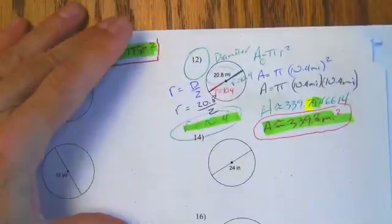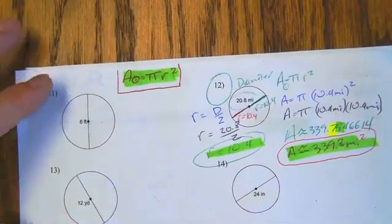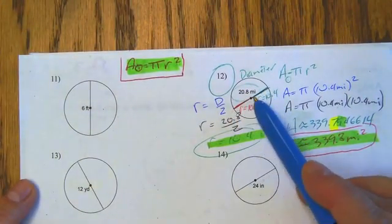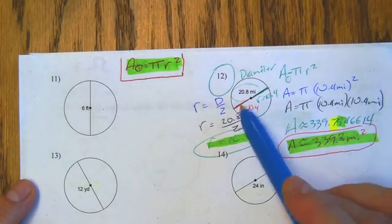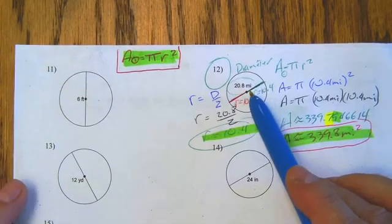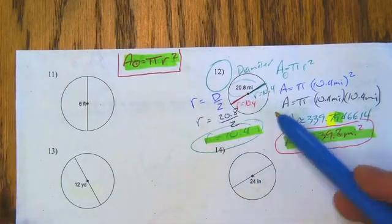Now the back one is the same kind of stuff. You find the area of the circle, but you've got diameter. So the only difference in this one is you've got to take the diameter. The diameter has two radii, or two radius into it, so you divide it in half. So it's going to be 20.8 miles divided by 2, and you get 10.8.